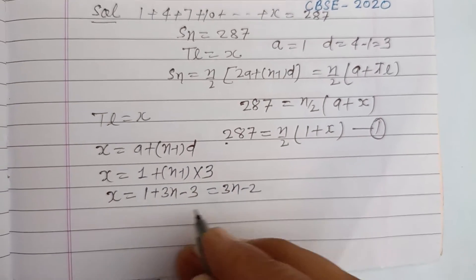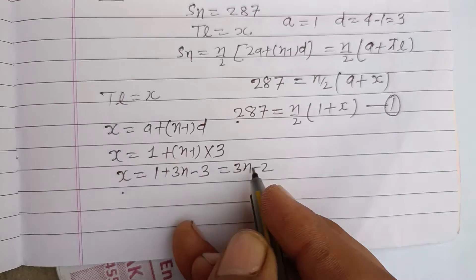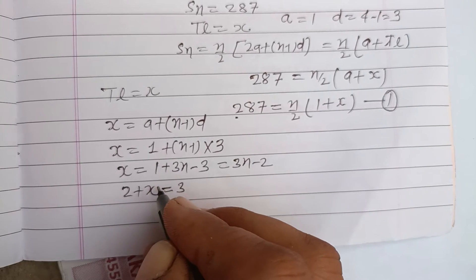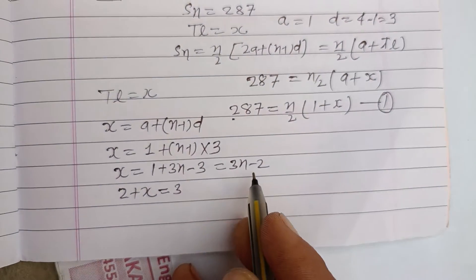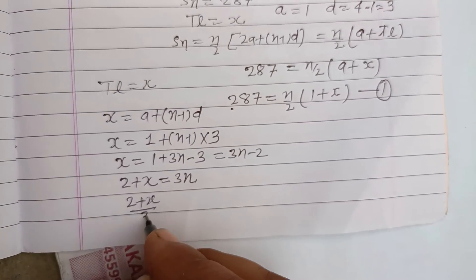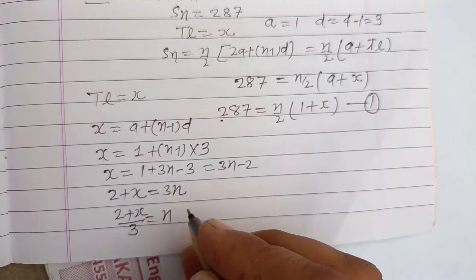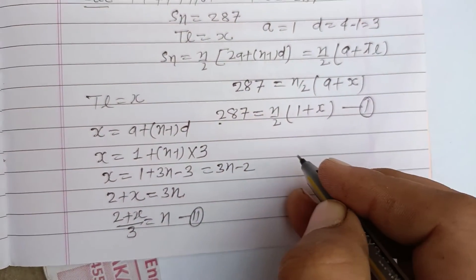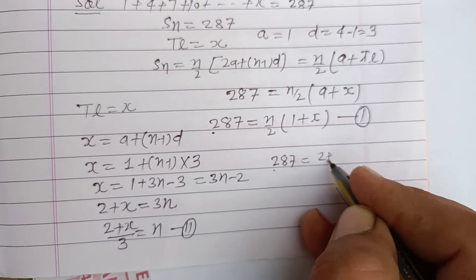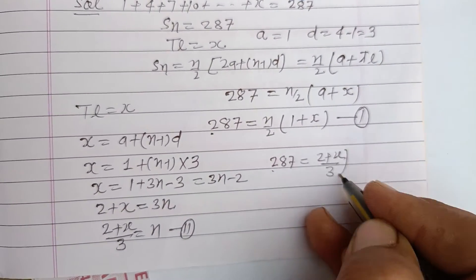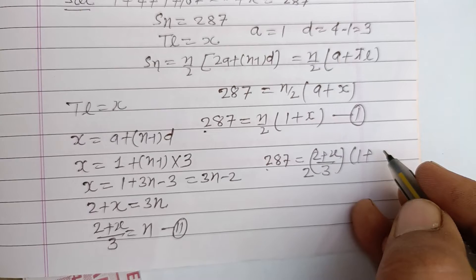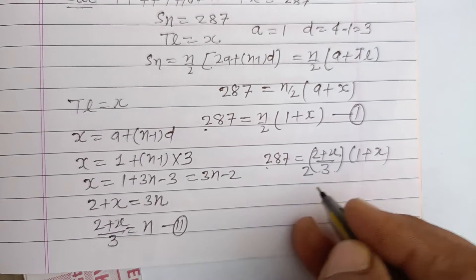We put the value of n from here: 2 plus x equals 3n, so n equals (2 plus x) over 3. Now putting this value into the first equation: 287 equals (2 plus x) over 3, times one half, times (1 plus x).